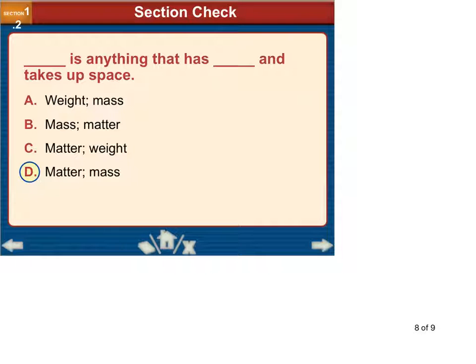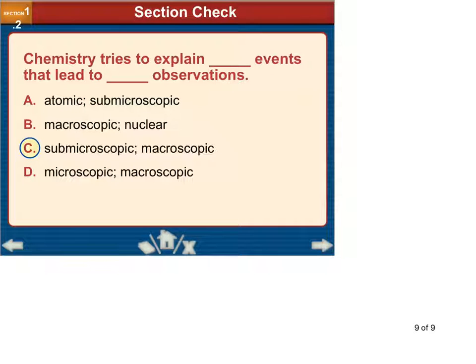A couple of review questions. Blank is anything that has blank and takes up space. So, matter is anything that has mass and takes up space. Chemists try to explain submicroscopic events that lead to macroscopic observations.